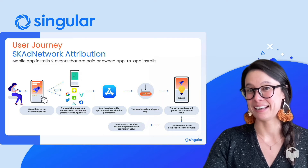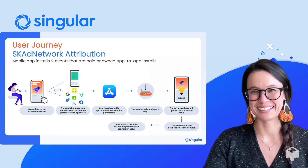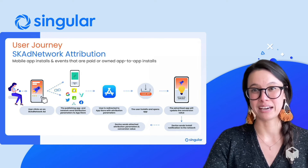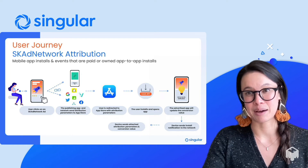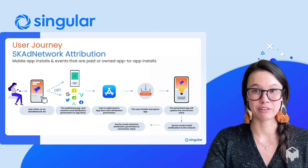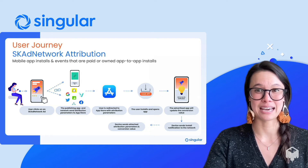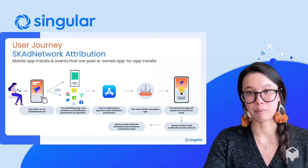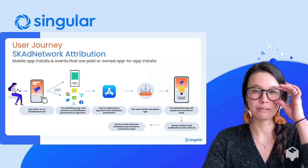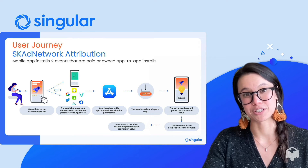A user clicks on an SKAdNetwork-specific ad and is directed to the App Store. From here on out, almost everything is different. The publishing app and the network provide the App Store some basic attribution parameters. After the user installs and launches the app, the advertised app will then update a conversion value to represent that install. The device will then send the attached attribution parameters and the conversion value, notifying the network of a successful conversion. The notification to the network, or a postback, is on a random 24-hour timer that starts after that app launch. No device or user identifying information is actually shared.